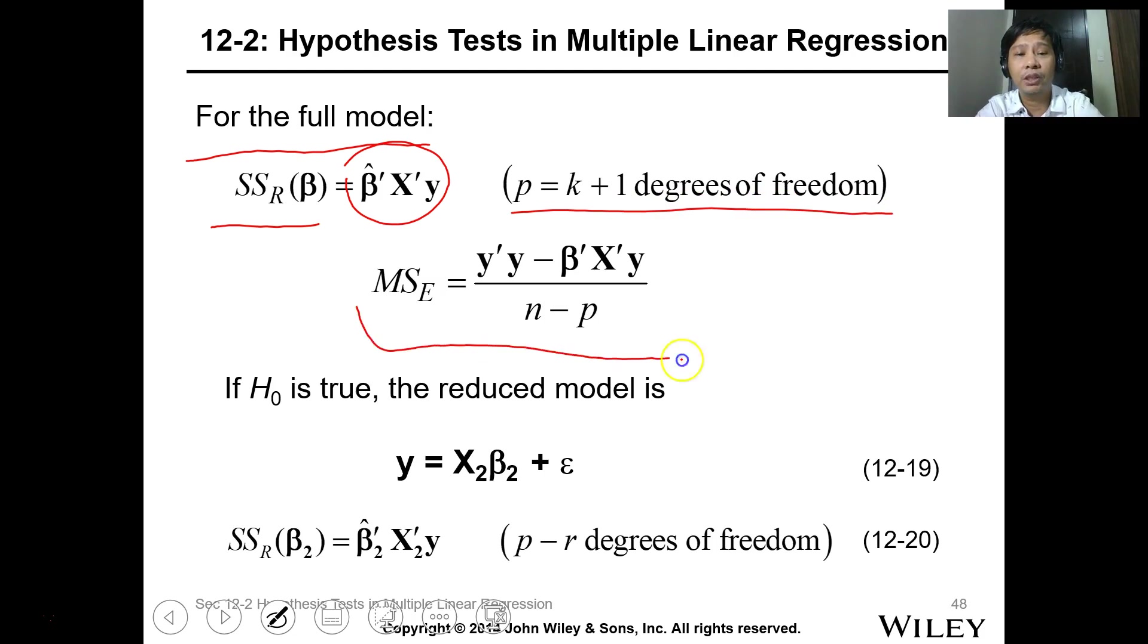So you get the SSR for that data. The test statistic will be SSR(β1|β2) divided by MSE. Reject H0 if F0 is greater than the critical value.